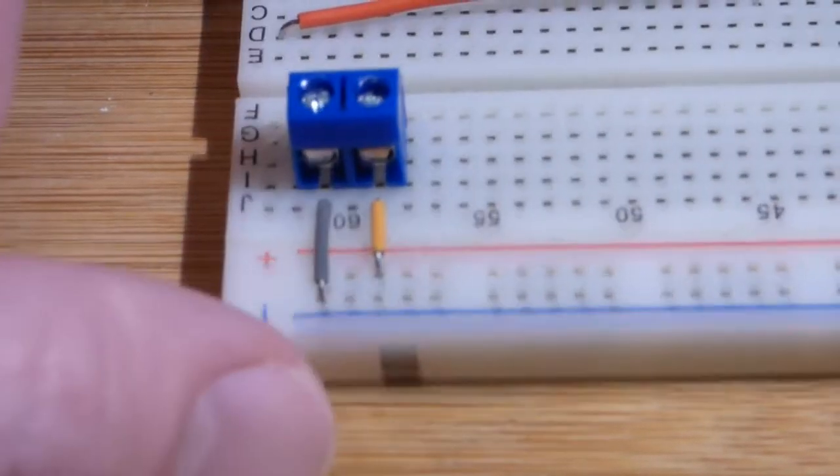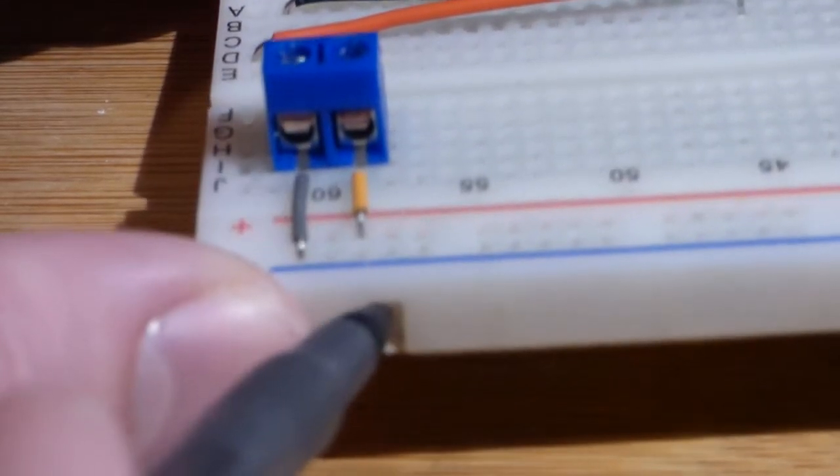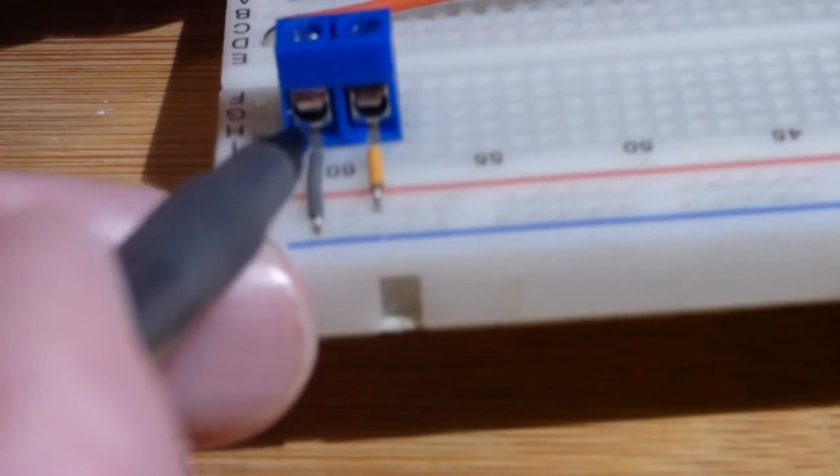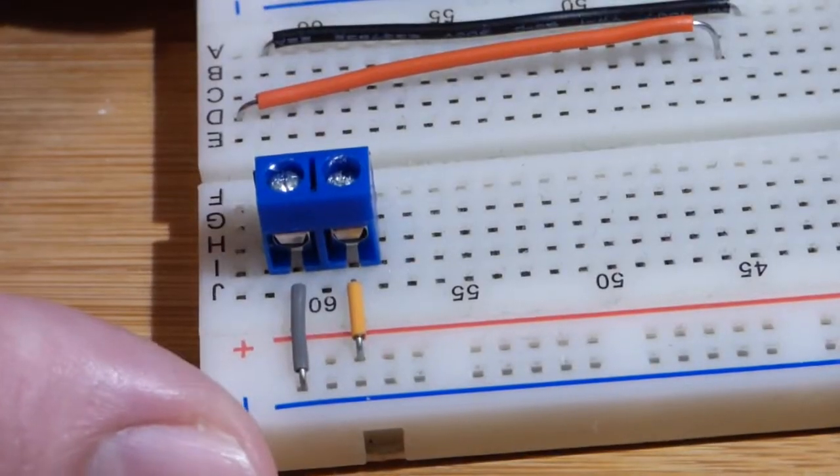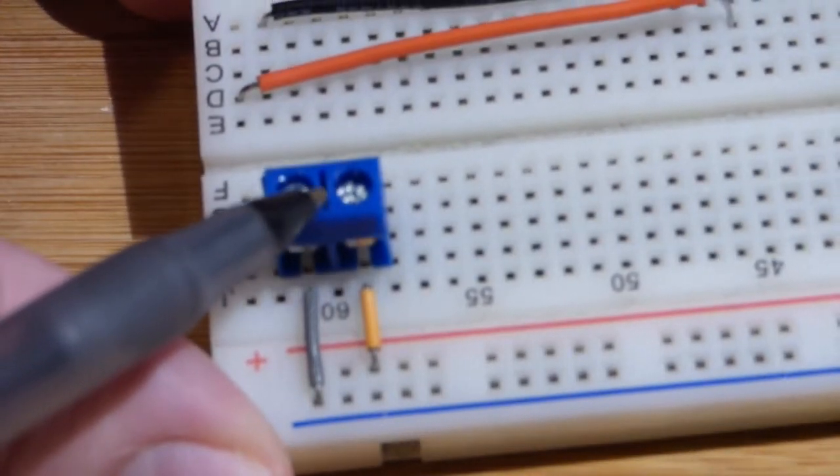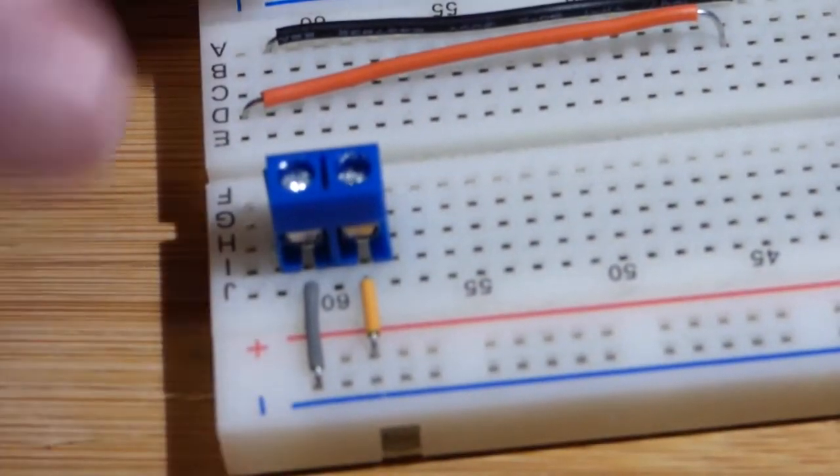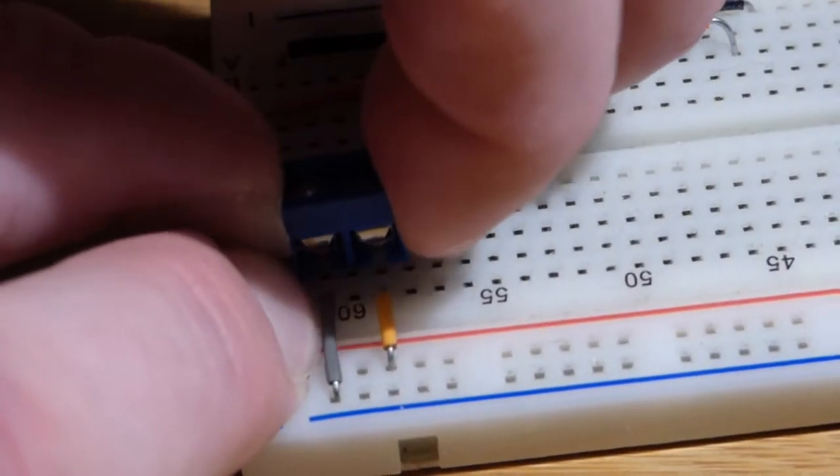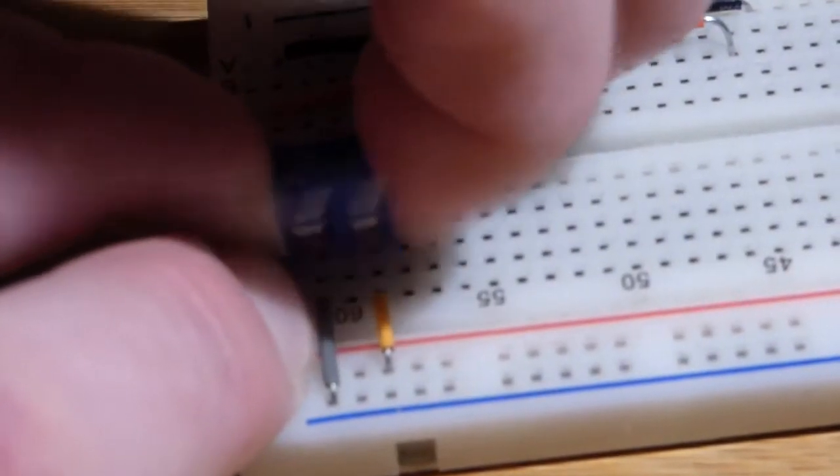We have this screw terminal here and it plugs into the breadboard and then to these two rows, and that's where we will put the wire. We'll look at that coming up. Up here is the screws. You unscrew them so they come up. This is in the board, pretty tough.